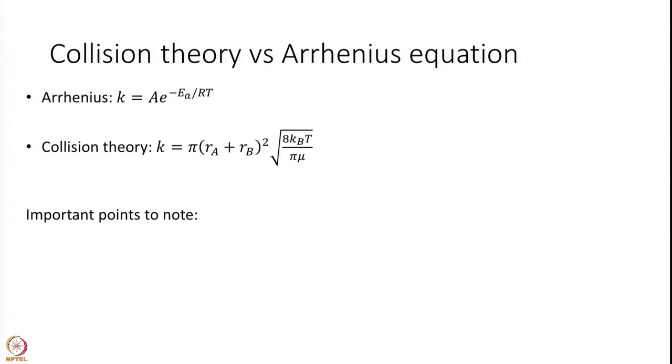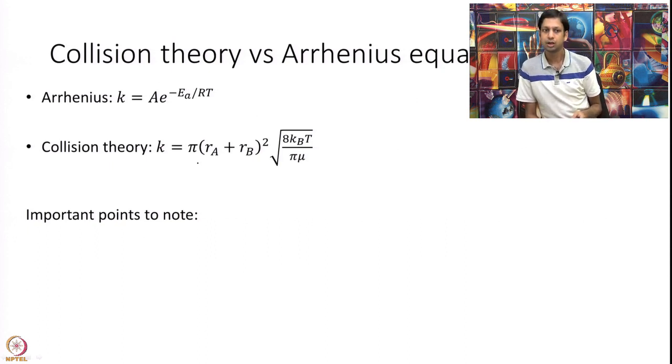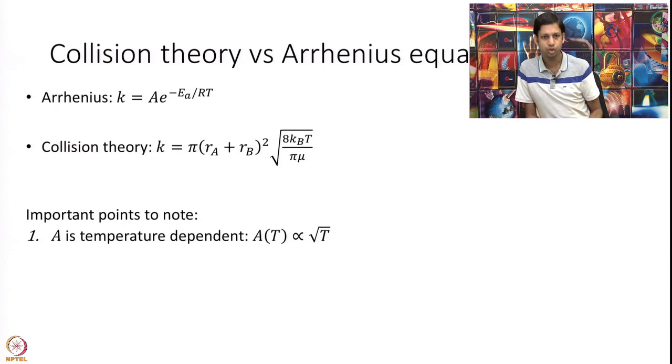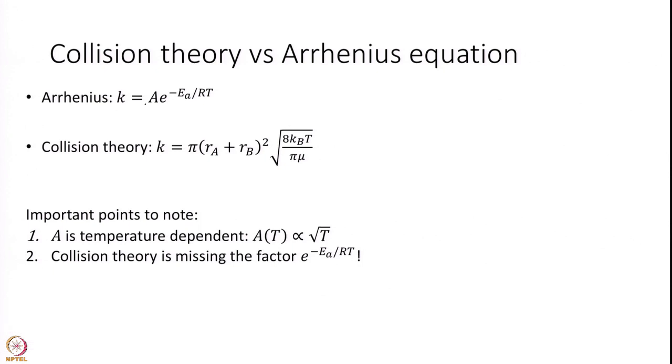We've got rate constant k equals pi times ra plus rb squared times square root of 8kT over pi mu, maybe a factor of half if A equals B. But let's take a broader picture. Arrhenius and Van't Hoff had earlier written a more general equation: k equals A times e to the power minus Ea over RT, and this was found to be experimentally true. Do these two equations now compare? A few important points to note. First, we're relating this A with our quantity. The first thing to note is that A has this temperature dependence, so A is proportional to square root of T.